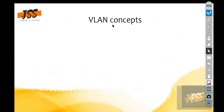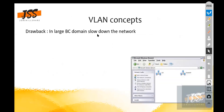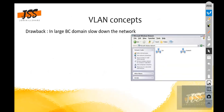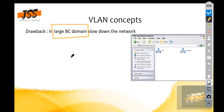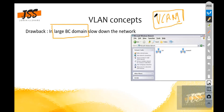If we don't configure VLANs, we have one large broadcast domain. Even with VLAN 1, every port will be a member of VLAN 1 by default, so VLAN 1 is considered one large broadcast domain.